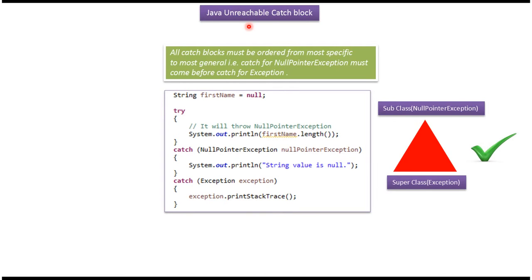In this video tutorial I will cover unreachable catch block. All catch blocks must be ordered from most specific to most general. In this case, catch for NullPointerException must come before catch for Exception. The first catch block handles the subclass NullPointerException, and the second catch block handles the superclass Exception. This is the correct order.